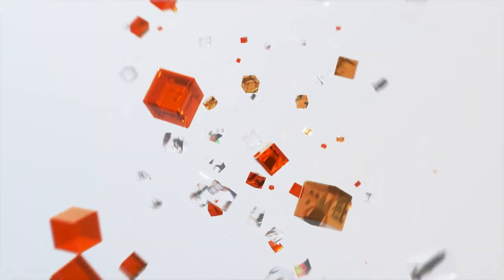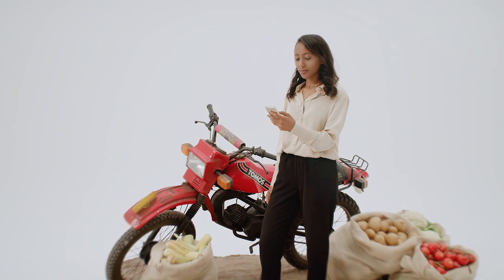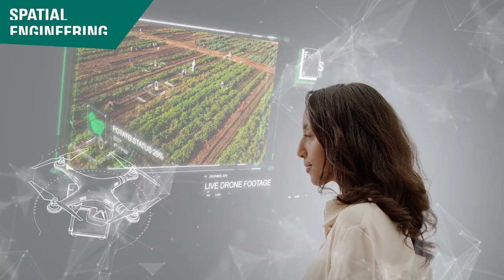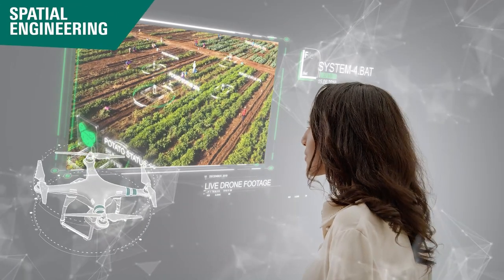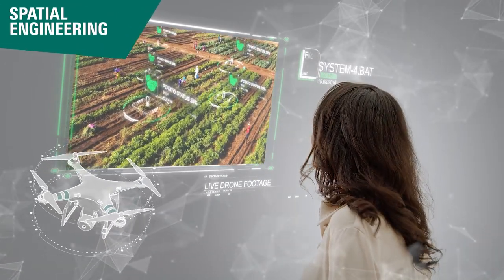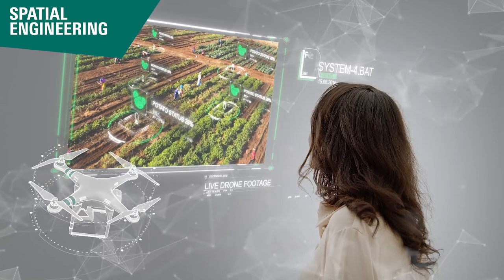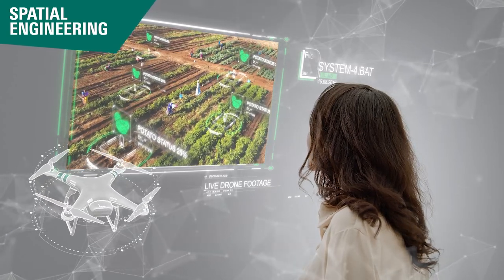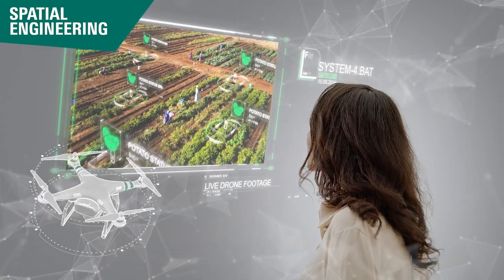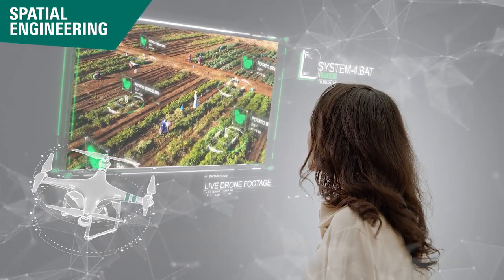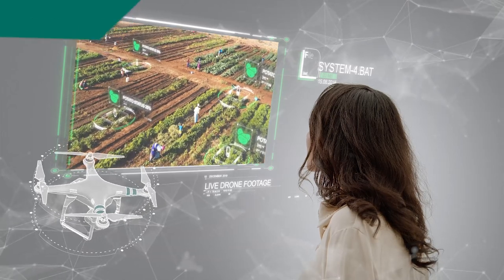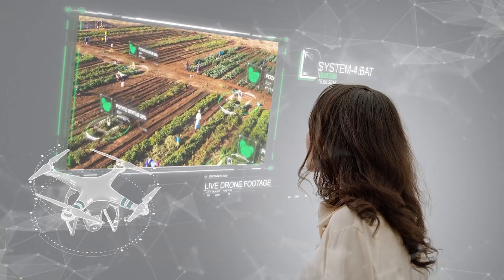Can satellite images improve food security in a country like Ethiopia? As a student in spatial engineering, you will learn how to use geospatial data like satellite or drone images to map the potential of agricultural land and help farmers provide food to consumers.